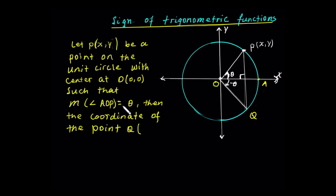Unit circle node. Let P have coordinates x, y. B is a point on the unit circle with center at origin (0,0), such that the measure of angle AOP equals theta. Let's see a positive angle — clockwise rotation. We examine rotation. We have the positive x-axis. Let's see the terminal side with this point. Now the negative angle. We have two clockwise rotations and two anticlockwise rotations.